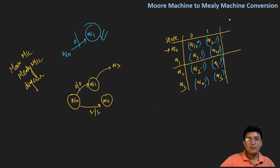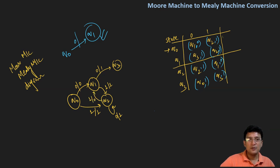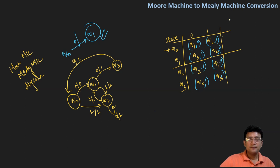Q1 moves to q2 on taking symbol one as input and produces output one. Q2 remains at itself with zero and the output produced is one. Q2 moves to q1 with one and produces output zero. Q3 moves to q0 on taking symbol zero and produces output one. Q3 remains at itself by taking symbol one as input and produces output one. This is the Mealy machine for the given Moore machine.